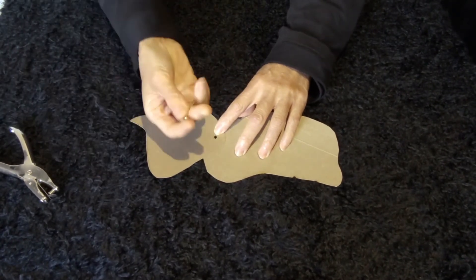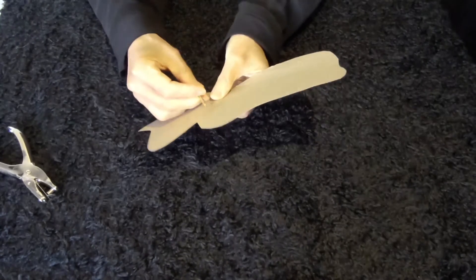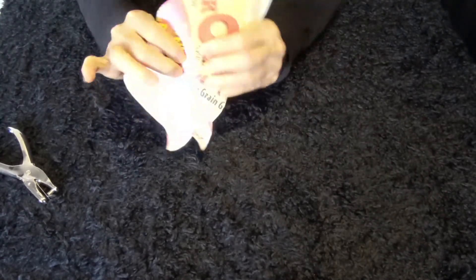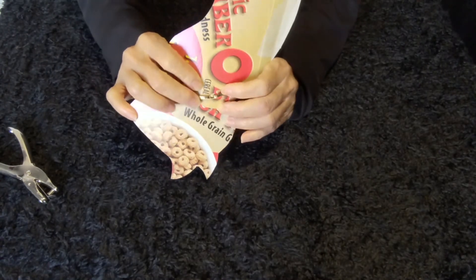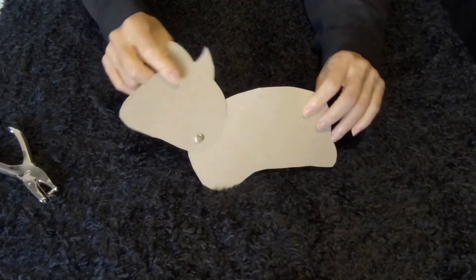And we're going to use a breast fastener to go through these two holes. And in the back, you're going to open up the legs like this. See? Now they're joined together.